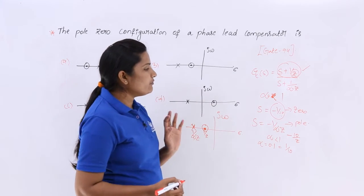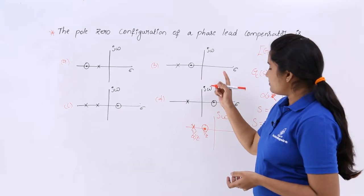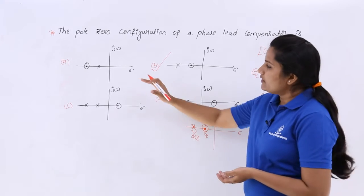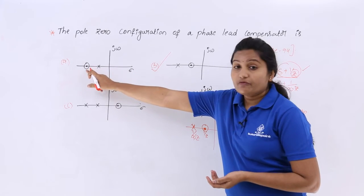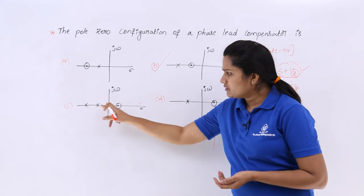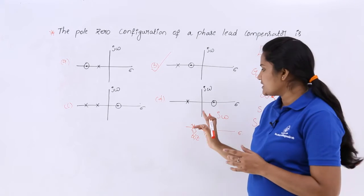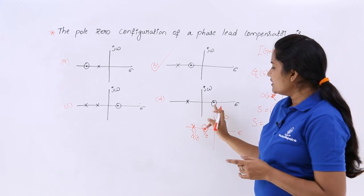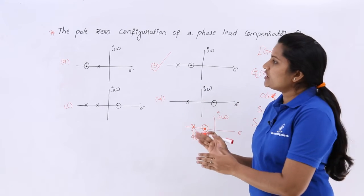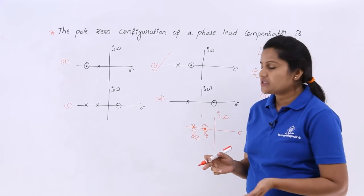The pole-zero plot of lead compensator you need to get like this. Which one is matching? B option is the right option for this problem. If you see here for right side of zero you are having pole. For this there are two poles and one zero but we are having only one pole and one zero. If you consider here this zero crossed this j omega axis. Whenever you are using compensator means the system is stable. The system needs to be stable.